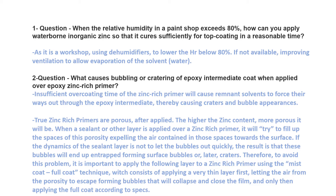Our second question is: what causes bubbling or cratering of an epoxy intermediate coat when applied over an epoxy zinc rich primer? So if you have a zinc first coat with epoxy zinc rich primer, and then you apply an epoxy intermediate coat over it, what causes you to face bubbling and cratering on the intermediate coat?